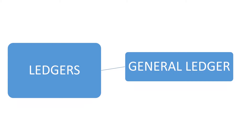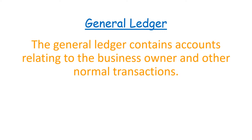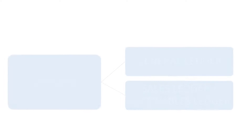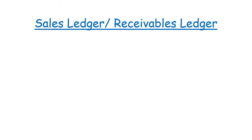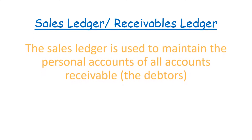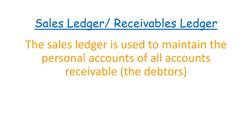The general ledger is simply a ledger that contains accounts relating to the owner of the business and other normal transactions. Then the sales ledger, or what we call the receivables ledger, is used to maintain personal accounts of all accounts receivable. By accounts receivable, I'm talking about the debtors.